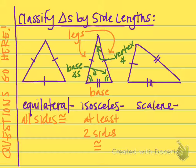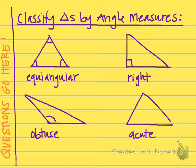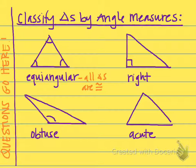Scalene is when all three sides have different lengths — basically there are no congruent sides. We can also classify triangles by their angle measures and ignore their sides. There are four types of classifications by angle measures. The first is equiangular, where all angles are congruent. Since all angles in a triangle add up to 180 degrees, if all three angles are congruent, they each equal 60 degrees. Something special about equiangular triangles is they also happen to be equilateral — so equilateral triangles are equiangular, and equiangular triangles are equilateral.